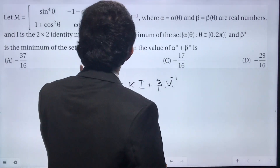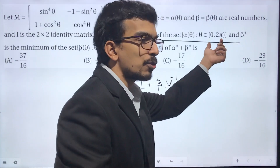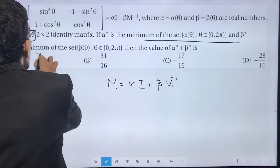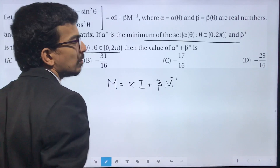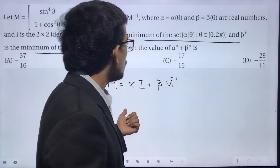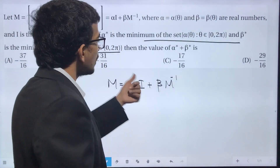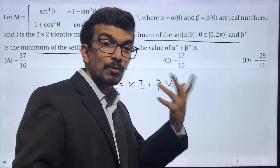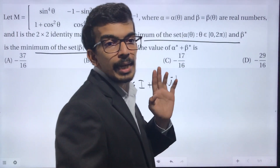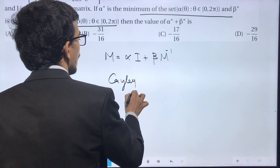After the first part, we have to find the global minimum of α(θ) in the interval [0, 2π], and also the global minimum of β(θ) in that interval. You might be wondering whether you need to find the inverse of M, but there is an easier way using what is called the Cayley-Hamilton theorem.